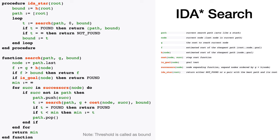Since IDA* is a variant of depth-first search, it uses recursive functions. In the implementation, you can see the function 'search' is called recursively. The important concept is the 'path' variable, which remembers nodes that have been successfully pursued and have a possibility of reaching the goal node.